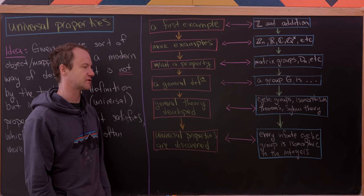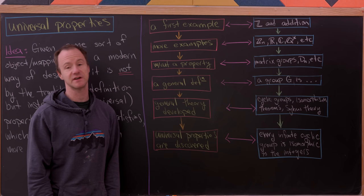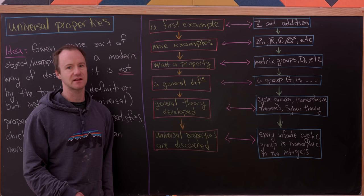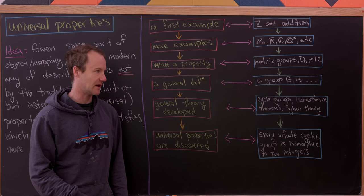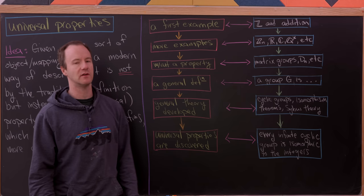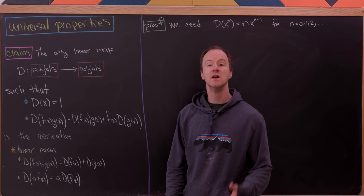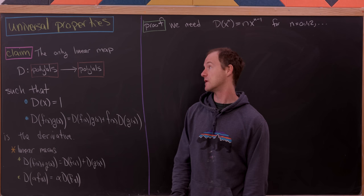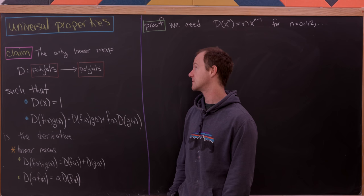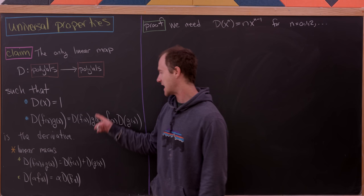Every infinite cyclic group is isomorphic to the integers. A cyclic group is a group generated by one element, and the integers are also generated by one element — the number 1 — since you can get to any integer by adding 1 or negative 1 to itself. Now I want to highlight the idea of universal properties with two concrete examples. The first is the derivative: we will show that the only linear map d from polynomials to polynomials satisfying d(x) = 1 and the product rule d(fg) = d(f)g + f·d(g) is the derivative.